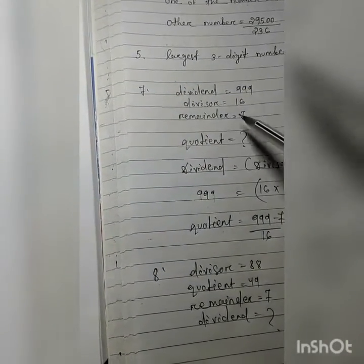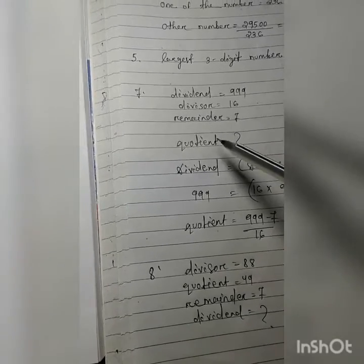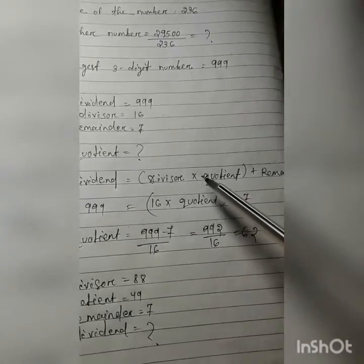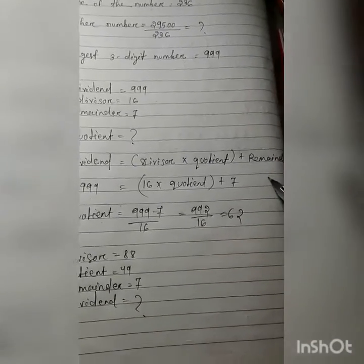dividend equal to this much, divisor equal to this much, remainder equal to this much. Then you have to find out quotient. Rule is given: dividend equal to divisor multiply quotient plus remainder.